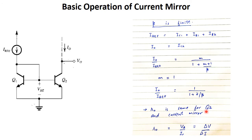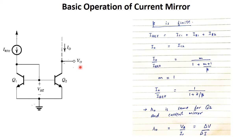The output resistance of transistor Q2 is also the output resistance of the whole current mirror. We can write this mathematically: R-out is equal to V-out over IC, or VA over IC, where VA is the Early voltage and IC is the collector current. This is also equal to ΔV over ΔI — the change in output voltage over the change in output current.